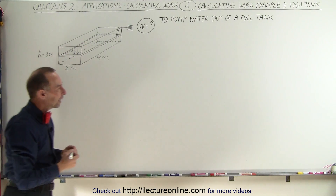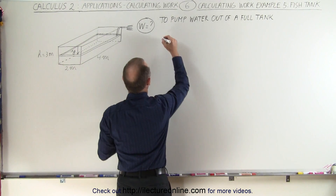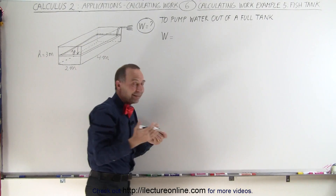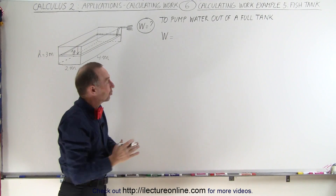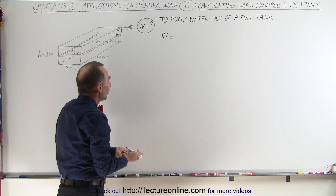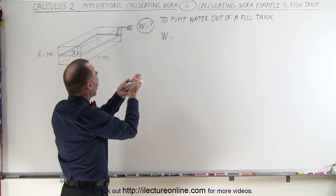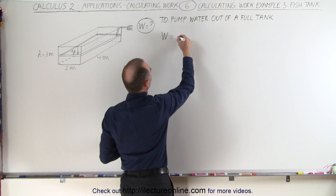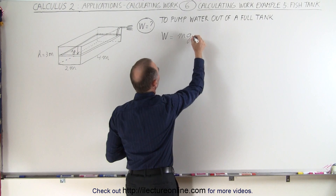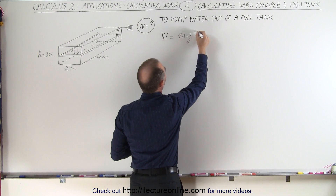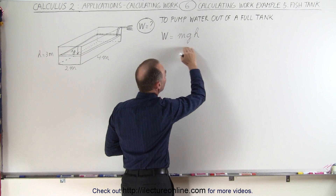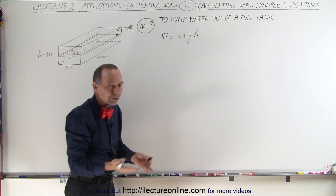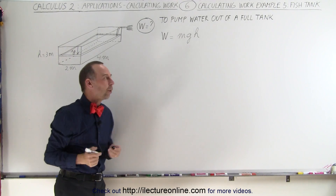The work to pump out water is essentially the same as pushing something up to a higher level, and that's what we're doing with the water. So it's going to be equal to the mass times acceleration due to gravity times the height. This is the increase in potential energy, which is equal to the work done to lift up the water.